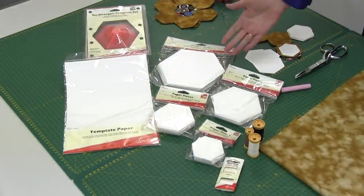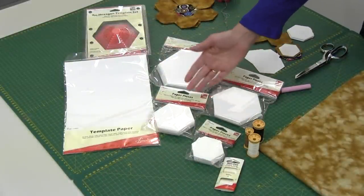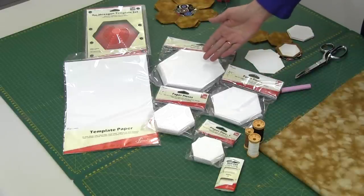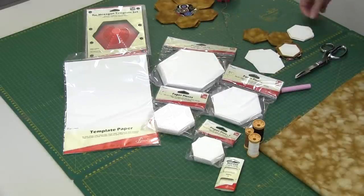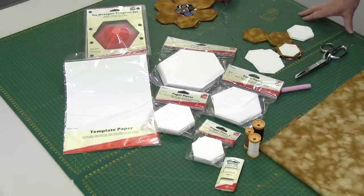We have hexagons in one and a half inch, two inch, two and a half inch, and three and a half inch pre-cut shapes in packets of 100.